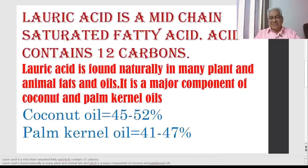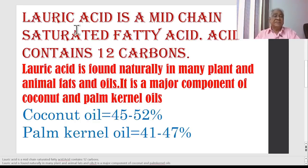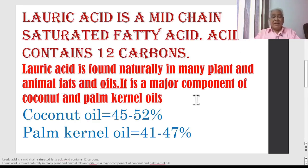Lauric Acid is a mid-chain saturated fatty acid. Fatty acids with carbons ranging from 6 to 13 are termed mid-chain. Below 6 carbons are known as short-chain carbons — butyric acid, for example, is a short-chain fatty acid. Lauric Acid, containing 12 carbons, falls under the mid-chain saturated fatty acid category. It is found naturally in many plant and animal parts and oils.